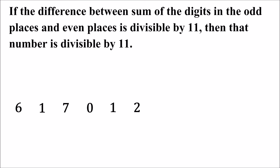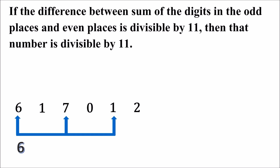Is this number divisible by 11? Let's see the digits at the odd places. When you see this number from the left hand side, the first digit is 6, 7 is at the third place, and 1 is at the fifth place. So 6, 7 and 1 are the digits at the odd places. The sum of 6, 7 and 1 is 14.